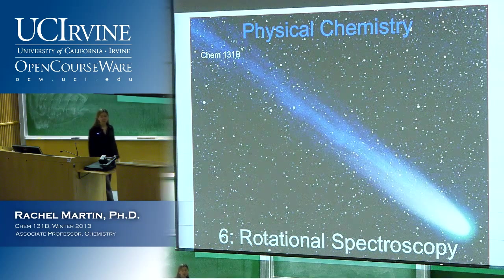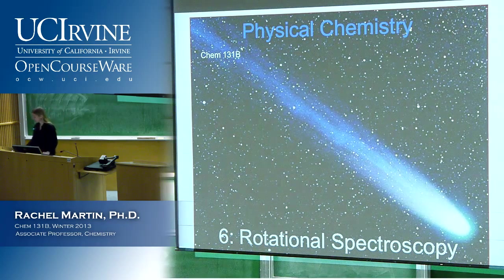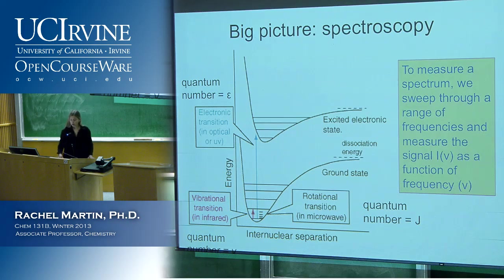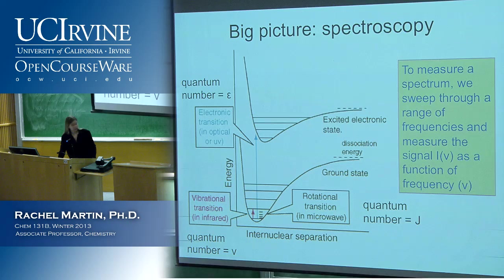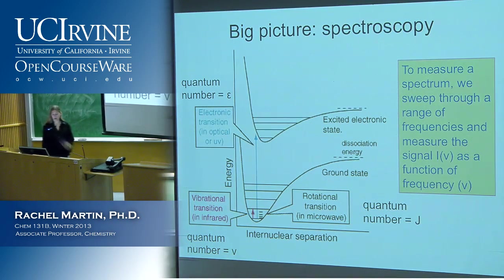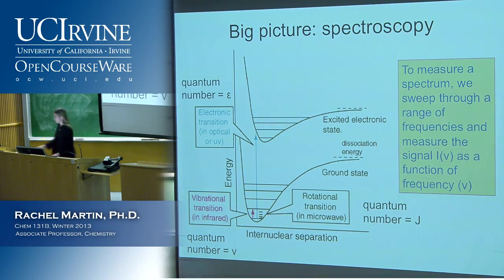We're talking about rotational spectroscopy. We're going through the different kinds of excited states that molecules can be put into as a result of interacting with electromagnetic radiation. Last time we looked at the big picture of spectroscopy. Right now we are in the bottom of the ground electronic state, in the ground vibrational state, and we're just talking about exciting rotational transitions on their own.